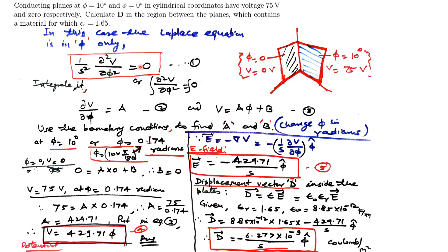We integrate delta²V/delta phi² equal to zero twice. The first integral gives delta V/delta phi equal to A, and integrating again gives V equal to A*phi plus B. We must apply the boundary conditions to find A and B. Since phi is given in degrees, we convert: phi equal to 10 degrees equals 10 times pi/180, which equals 0.174 radians.